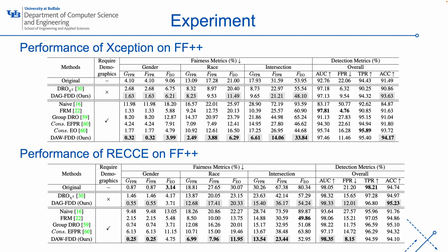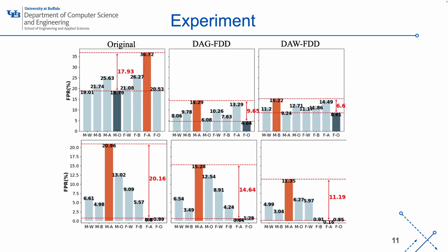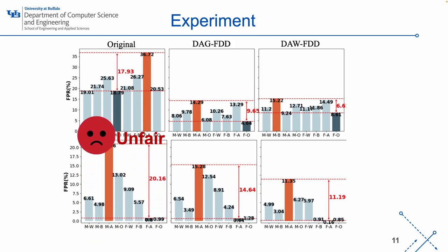The first part involves applying our methods to two popular deepfake detection models, Xception and RecCE, on the FF++ dataset, comparing them with the original method without any fairness constraints, several conventional fairness methods, and data-level fairness methods. From these two tables, our two methods achieve good fairness without sacrificing detection performance too much. We also present the FPR of each group. As shown originally, the maximum FPR gap is 17.93 between the male other group and the female Asian group. After using our methods, the differences drop to 9.65 and 6.61, which are fairer than the original methods.